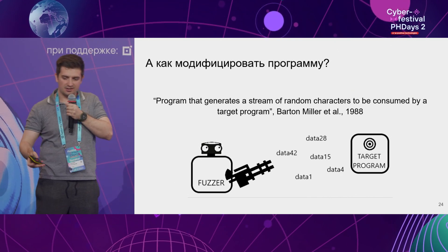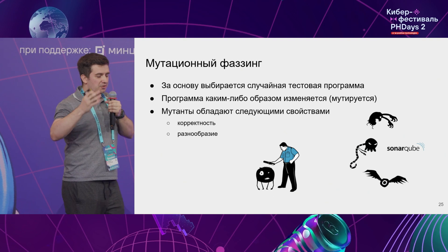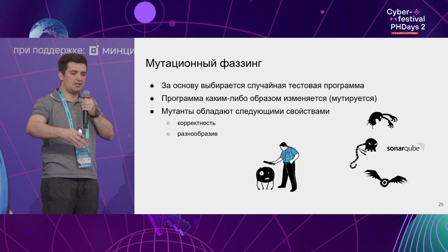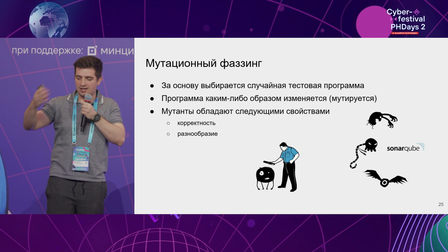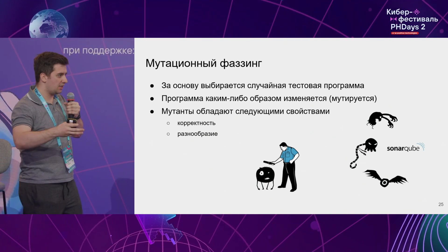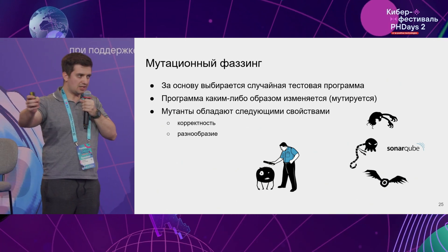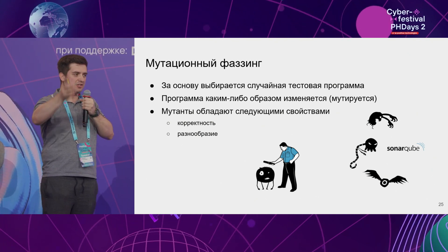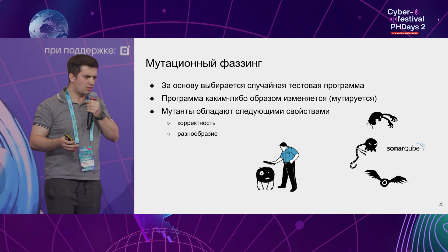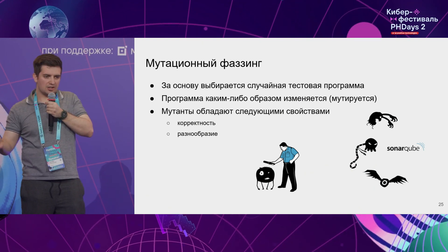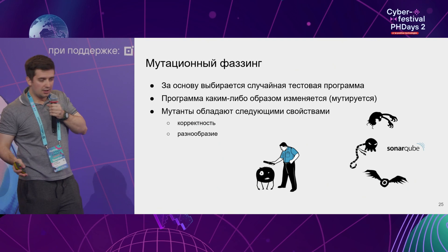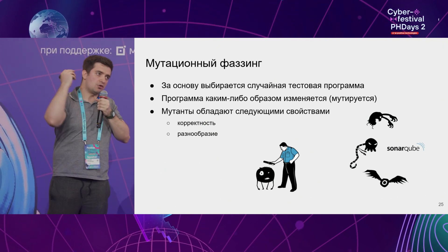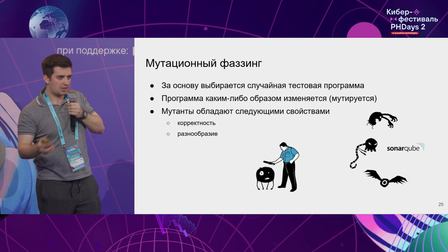Mutation fuzzing is a more advanced version. Initially, for fuzzing, data would be generated from scratch. With mutation fuzzing, once we're in the software, the data starts mutating. If a function takes 42 and goes pretty deep, we start adding one or subtracting one, hoping this data will bring about certain results. Respectively, you can mutate software in the same way using structured representation. The mutants we get from the initial software need to be syntactically compliant, and they must be unique, because no one wants the same kind of mutants.